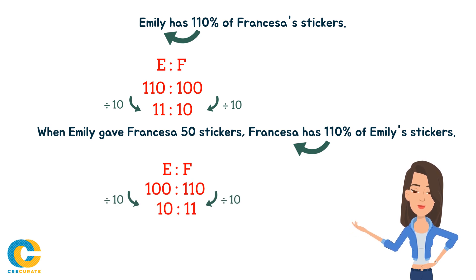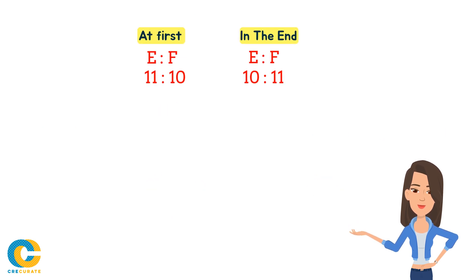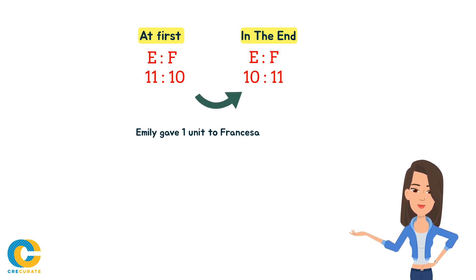Note that the total number of stickers for both parts of the question is 21 units, since neither of them received or gave their stickers to anyone else. By looking at the mathematical ratios we have written down from the two sentences, we can observe that Emily gave one unit of her stickers to Francesca.